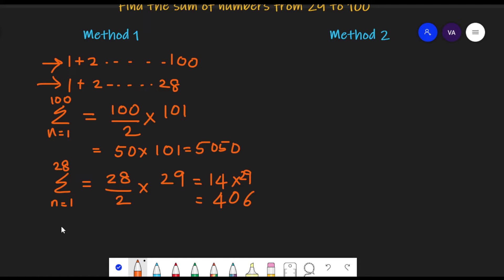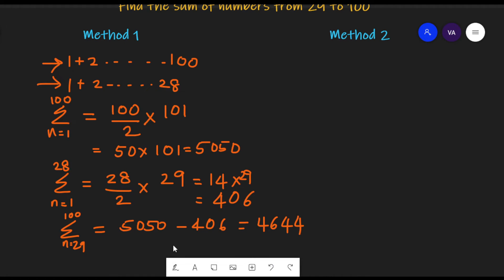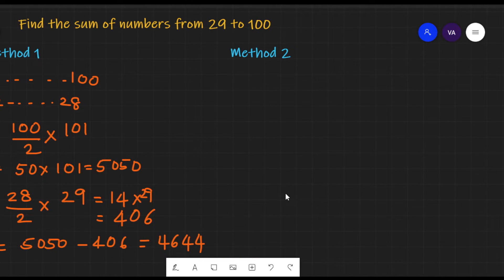So the actual sum from n is equal to 29 to 100 is 5050 minus 406, which works out to be 4644. So this is one method. Let's see how we can find with the other method.